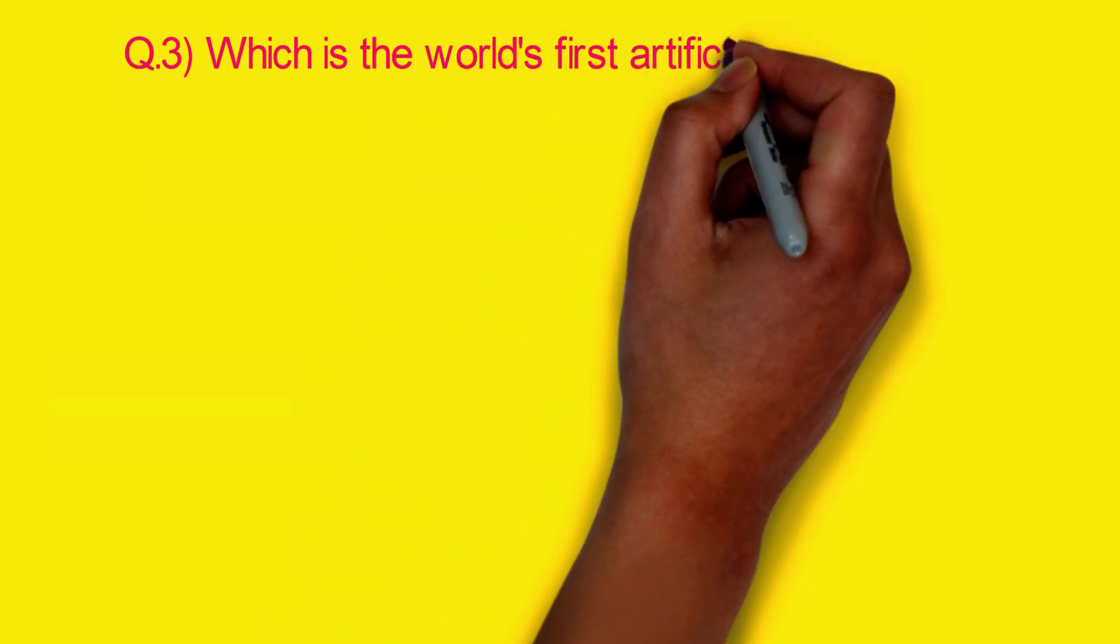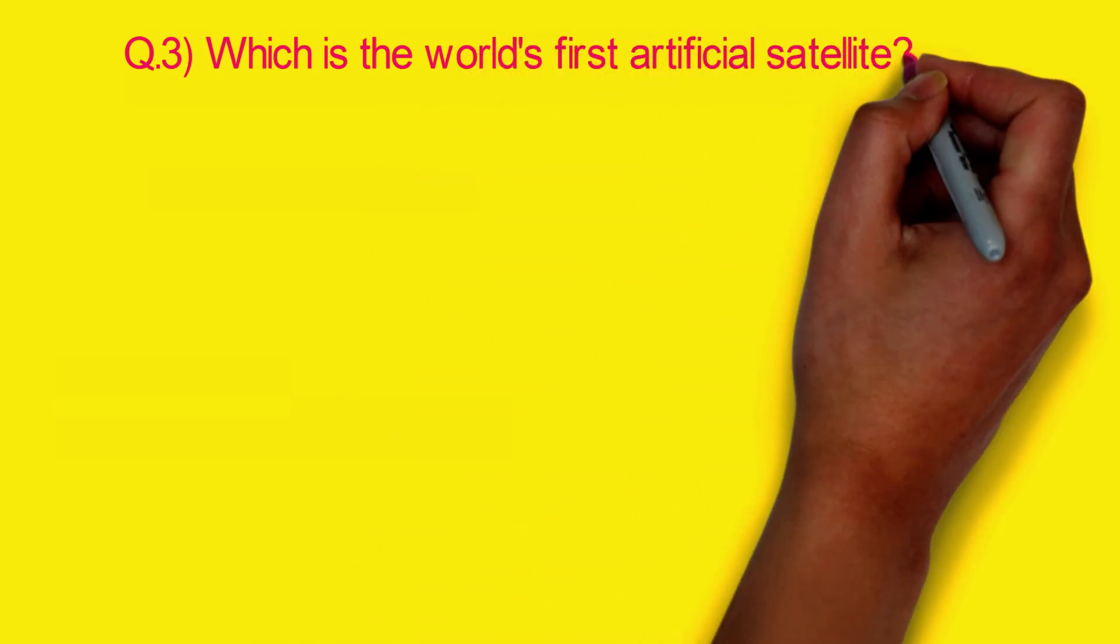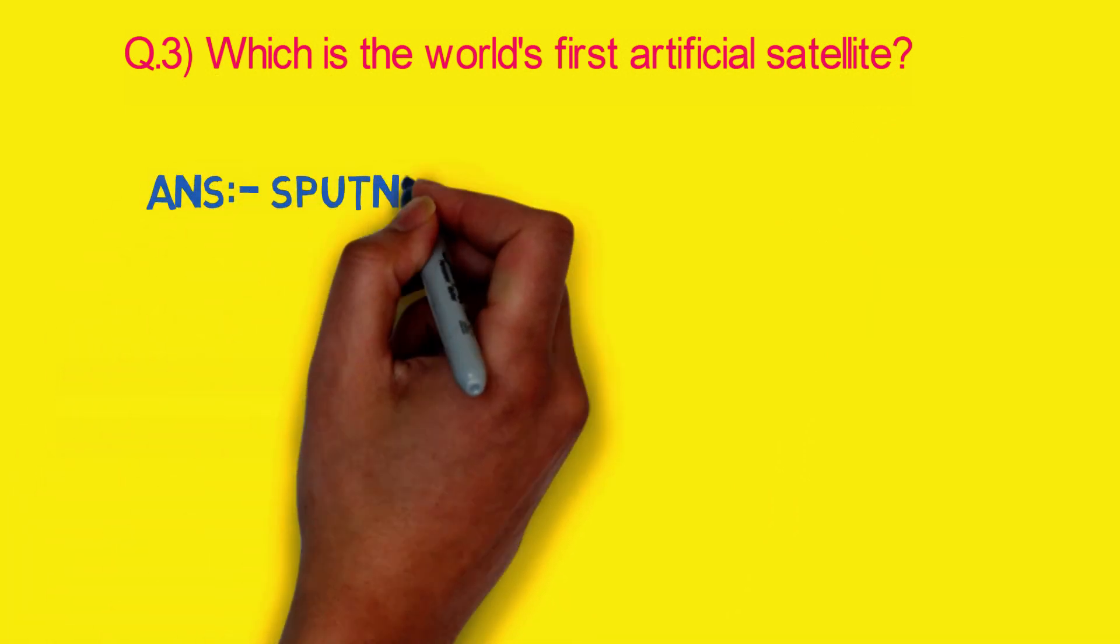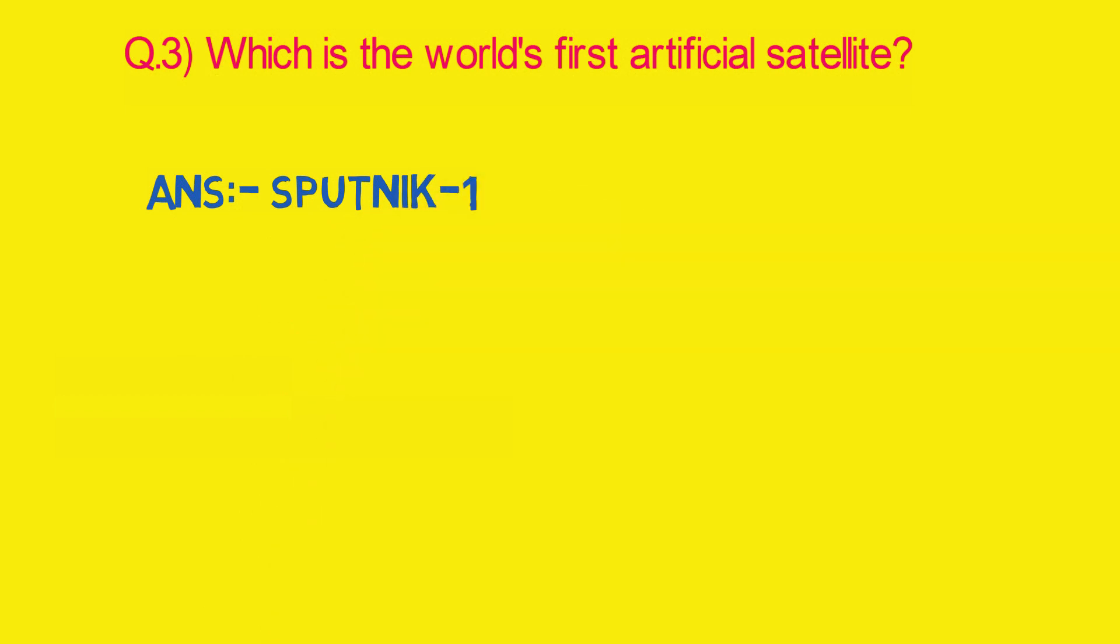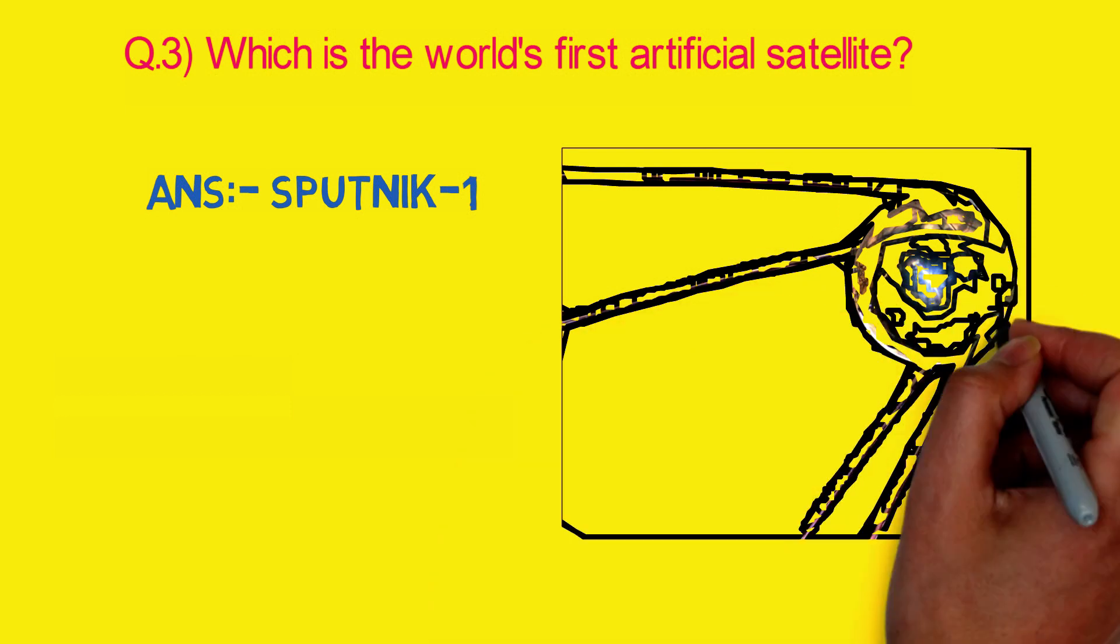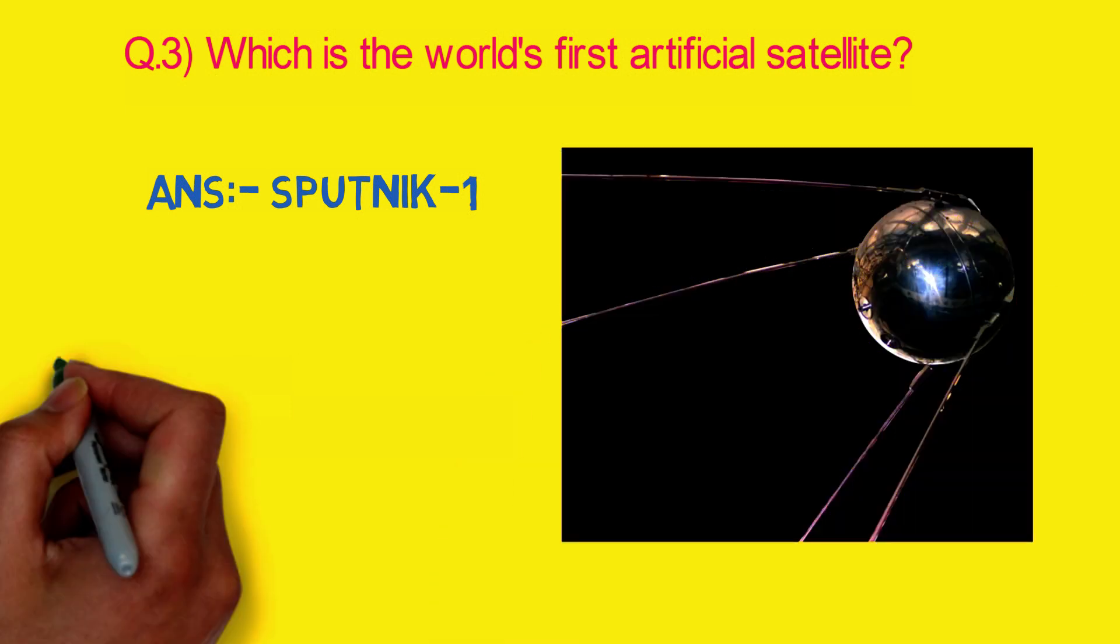Which is the world's first artificial satellite? The answer is Sputnik 1, which was launched by Soviet Union on October 4, 1957.